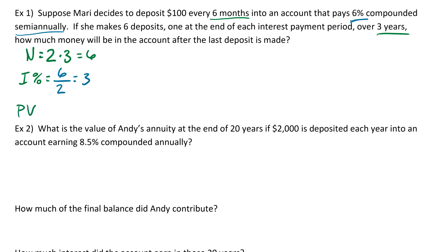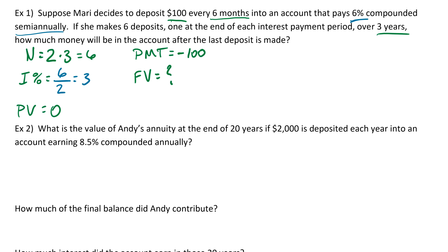Present value is always zero for these problems. The payment is $100 deposited each time, but remember it must be negative, so we enter negative 100. Future value is what we're solving for. If you have a TI-83 or TI-84, go to Apps, select Finance, then TVM Solver and press Enter — you'll see all these variables listed there.